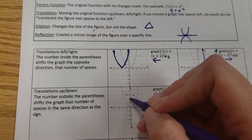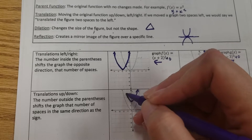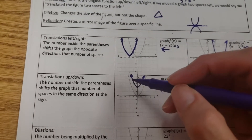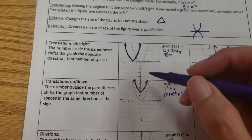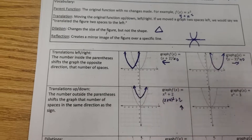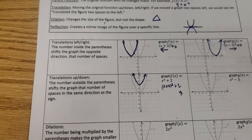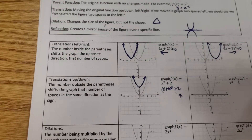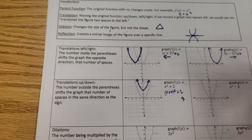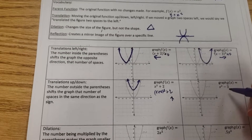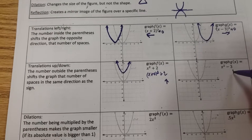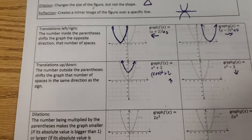It's difficult with a parabola to graph all these points and keep track of where they're all moving. Pay attention to where the vertex is moving and take the rest of the graph with it. Now this one has a negative 3, so negative 3 tells us to move down three spaces.